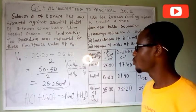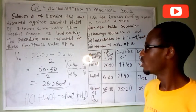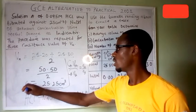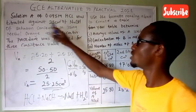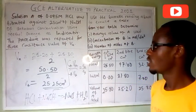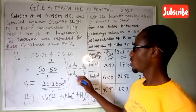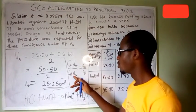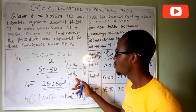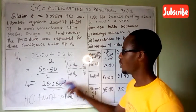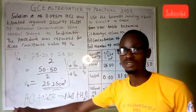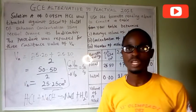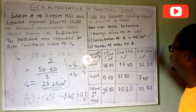Va is the average titration value we calculated. Vb is the volume from the pipette - we were told it was titrated against 25 cm³ of the base. Ca is given as 0.095 mol/dm³. With all these values, you rearrange the formula to make Cb the subject and solve. Vb is the volume of the pipette, Va is your titration value, na/nb comes from the balanced equation, and Ca is given.